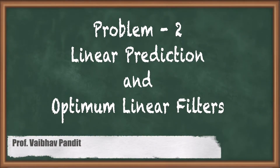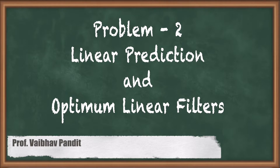Hello friends and welcome to this video. We are on the 19th topic from chapter 5, titled 'Linear Prediction and Optimum Linear Filters.' We have already covered the details needed to understand and design linear prediction and optimum filters. Based on that understanding, we are solving a few problems. One problem we just covered involved a discrete-time random process of the autoregressive (AR) type. We are now going to solve one more problem — Problem 2: Linear Prediction and Optimum Linear Filters.